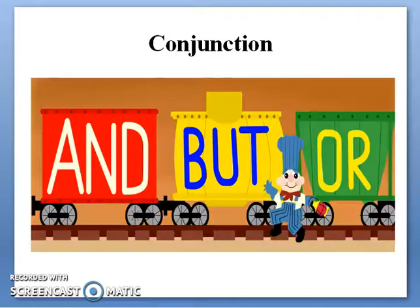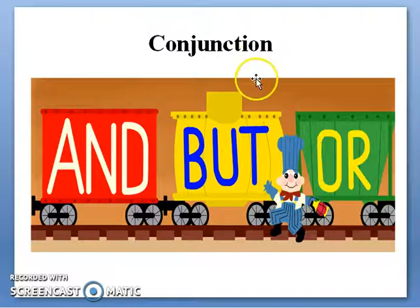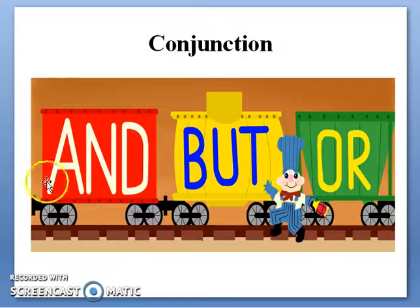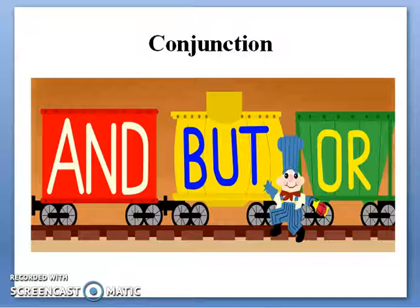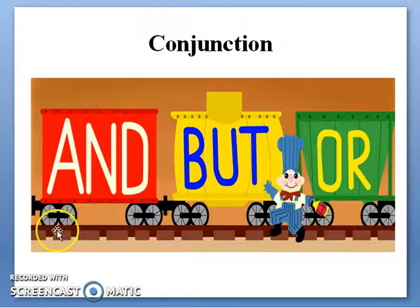Next one is conjunction. Look at the word 'junction' inside it — junction means to link. Conjunctions are those words that can link two words or sentences. For example, Sara and Sana are sitting together — we join two words with the conjunction 'and'. You can join sentences using conjunctions like but, if, so, because, and many more. So, conjunction is to link.